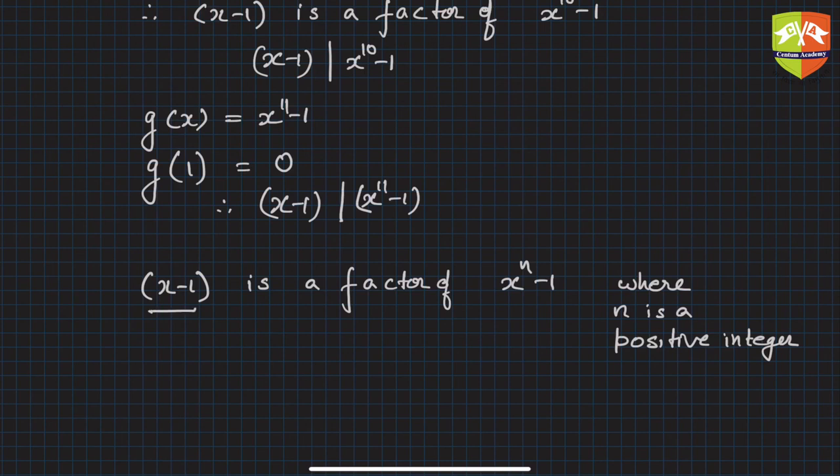Why? Because every time, let's say if h(x) is x^n - 1, therefore h(1) if you see will always be 0. 1^n - 1 is 0.